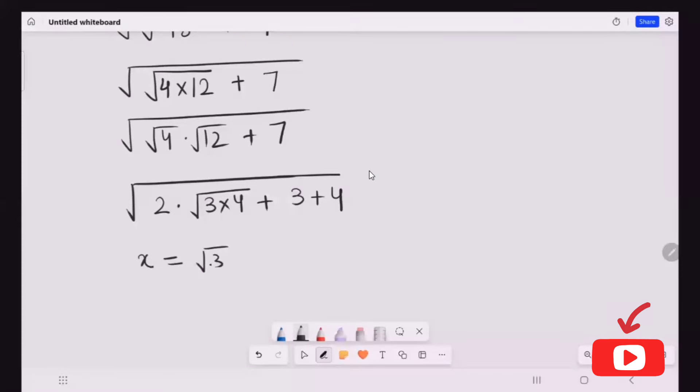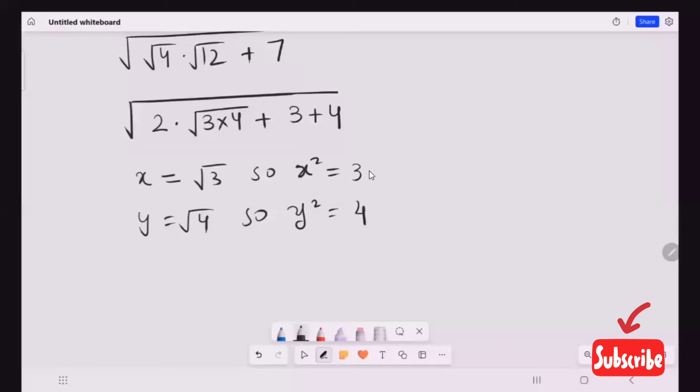Now we get the identical situation. I'm going to apply x is equal to radical 3, so x squared is equal to 3. y is equal to radical 4, so y squared is equal to 4.